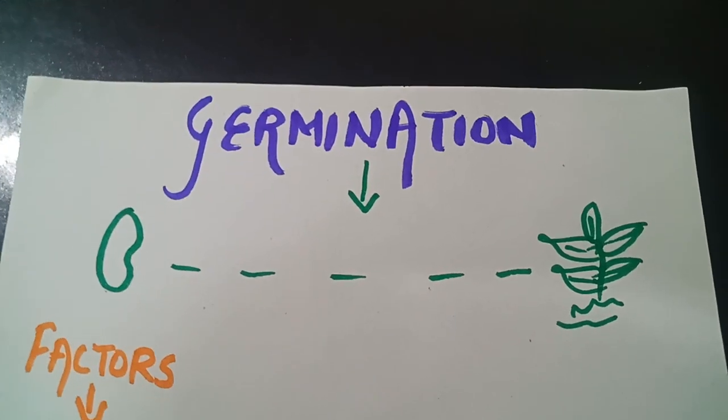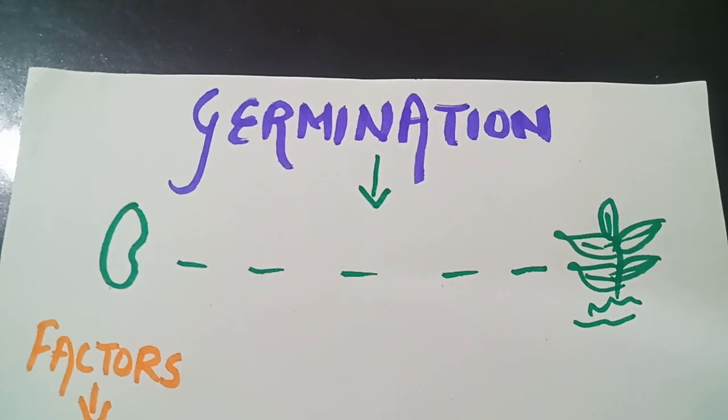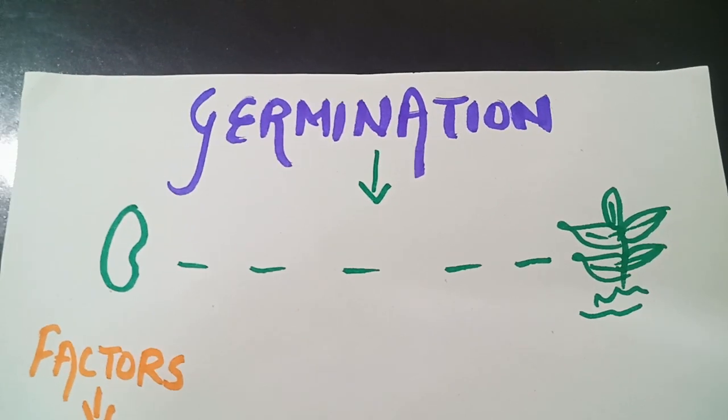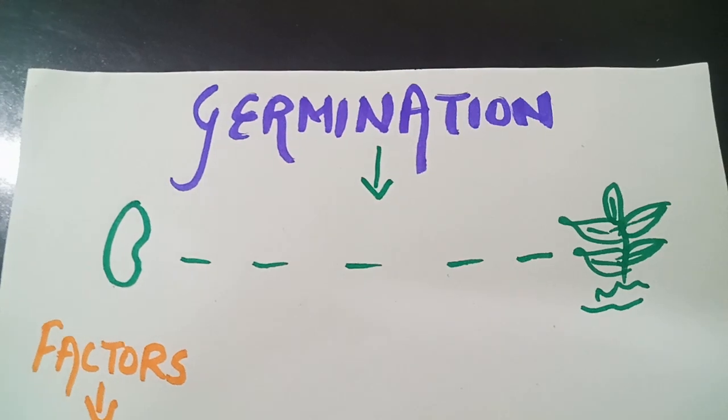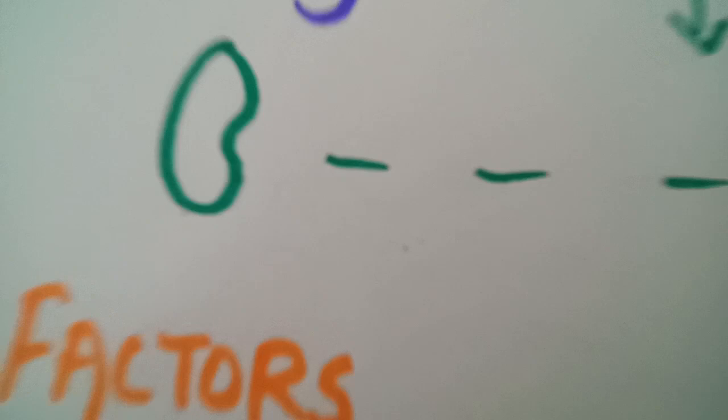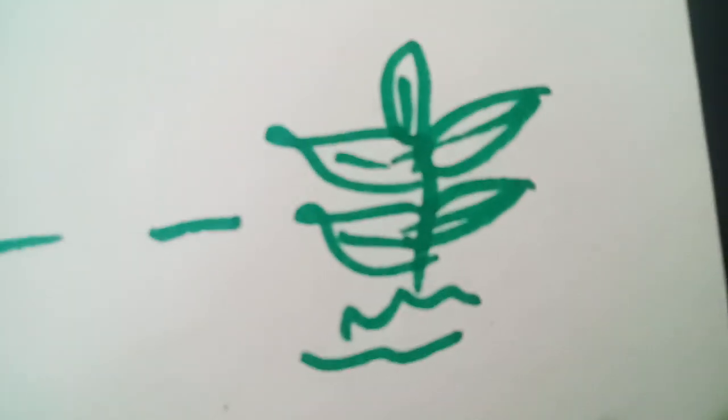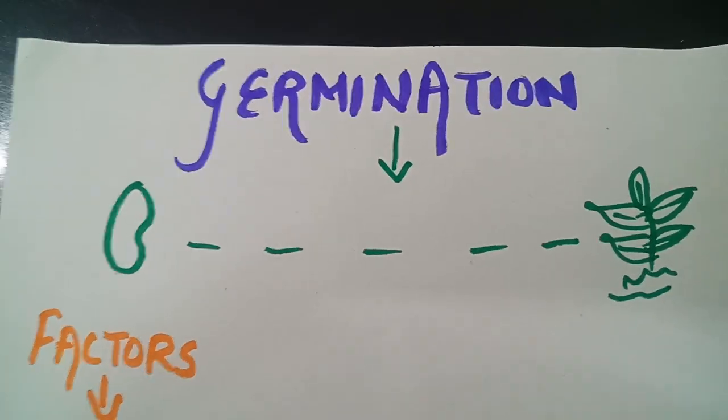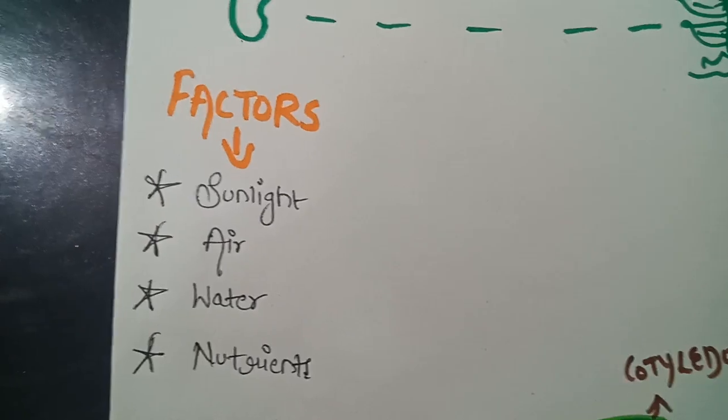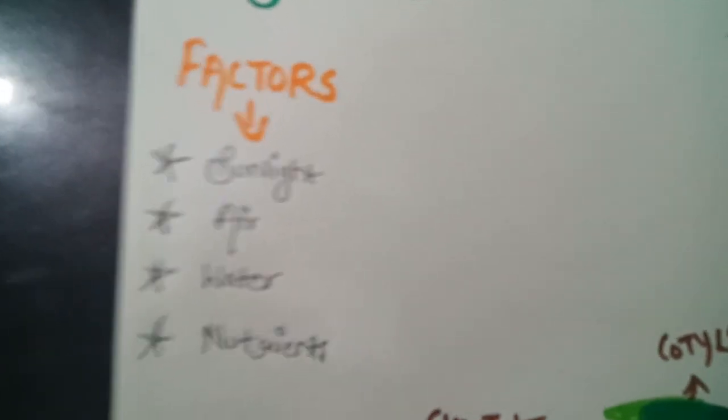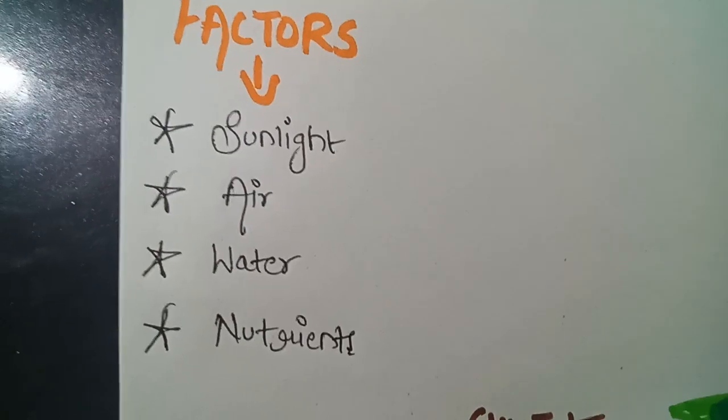Now let's move on to the topic germination. Germination is equally important as compared to reproduction or any other topic. Now do you know what's germination? The process by which seed grows into a new plant is known as germination. And certain factors are there which is very much required in this germination process. We are having four factors.